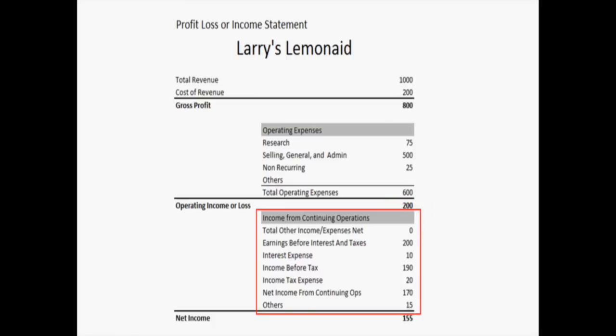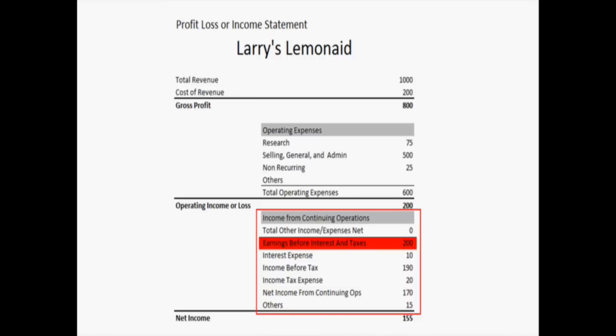Below that is the income from continuing operations section. If you look up a publicly traded company, you'll see a whole list of different items under there. This can be especially confusing because most of these numbers, again, are expressed as a positive but they're being subtracted from the gross profit. The first line there is total income, other expenses net, and this company didn't make any extra money. But let's say Larry's Lemonade was also renting out a small section of his stand to somebody for advertising — he would express that number there to show that he did make money in another way.